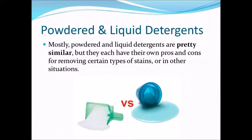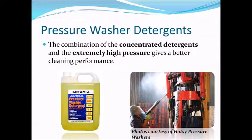There are two versions of detergents: powder and liquid. Mostly they are quite similar, but one may be a better choice in certain situations. For example, when dealing with oily stains, it is recommended to use liquid detergent because it can act as a pre-treater for the stain. For industrial uses, detergents are also applied with pressure washers.